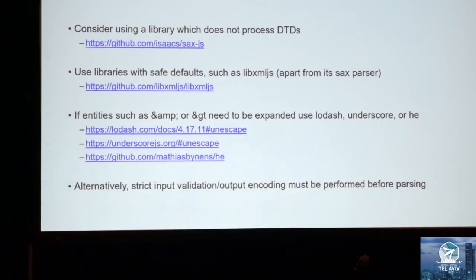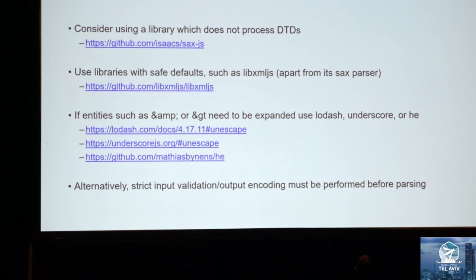How would you try and prevent this in Node? You may want to consider just using a library that doesn't parse DTDs — there is sax.js which doesn't even process entities by default, making it a technically safe implementation. Definitely consider using libxml.js over node-expat because it is safe by default and you would have to make a configuration change to make it vulnerable. If you need ampersand or greater-than converted into actual attributes, consider using Lodash, Underscore, or he for unescape functions. And of course if you can't approach those things, make sure you are doing strict input validation and output encoding before passing the data.